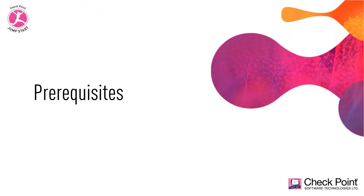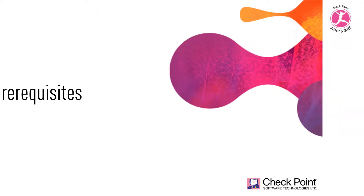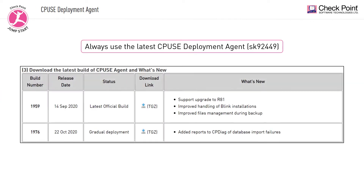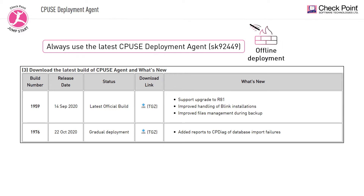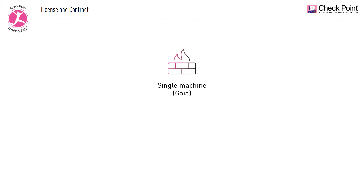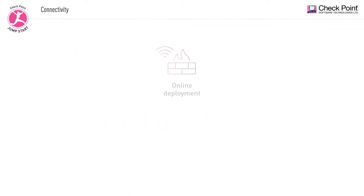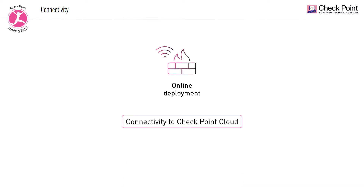In terms of prerequisites, it is advised to always use the latest CPUSE deployment agent, which can be found in SK92449 — this is relevant to offline installations. The deployment should be performed on a Gaia OS machine, and you should make sure you have a valid license and contract before you perform the deployment. In case of online deployment, you need to verify connectivity to the Check Point cloud.